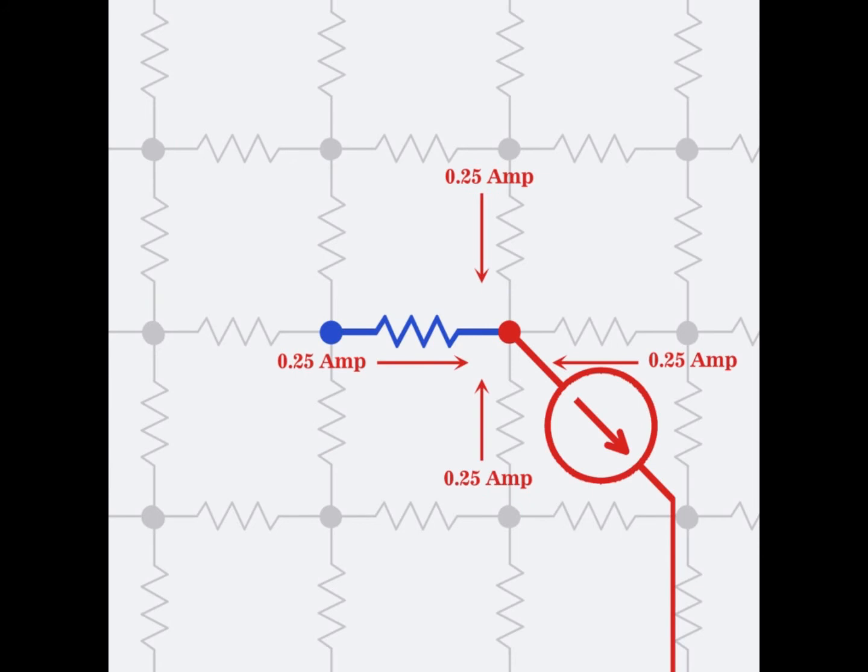Applying a second current source with a negative 1 ampere to node B of the same resistor yields a similar result.